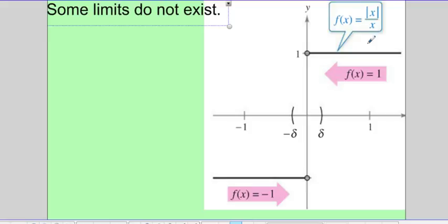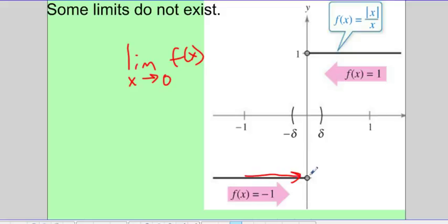So sometimes a limit doesn't exist. Let's take this example of the absolute value of x divided by x. So if you're graphing on the positive side of the x-axis, you have basically f(x) = 1. And on the negative side, you have f(x) = -1. Now, if I asked you to find the limit as x approaches 0 of f(x) in this case, that doesn't exist. We can't find that, because if you approach from the left-hand side, it goes to -1. But if you're going from the right-hand side, it's approaching positive 1. So it's different from both sides, so this does not exist.